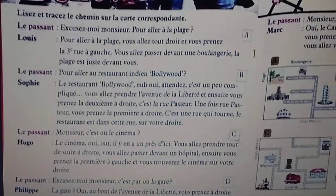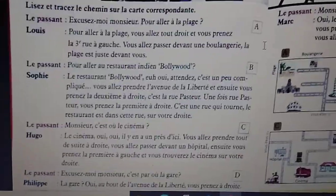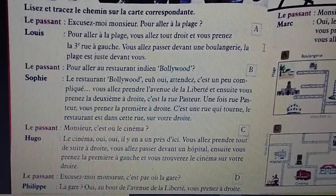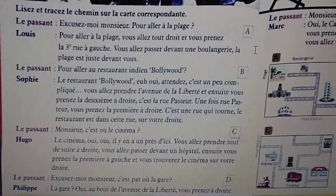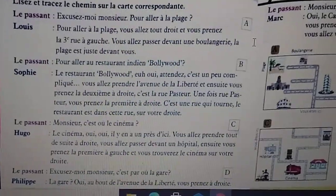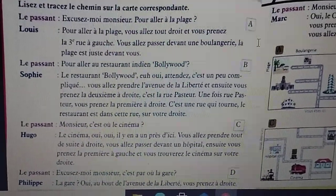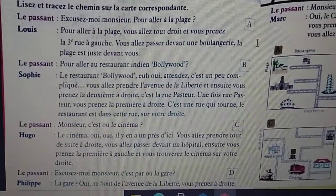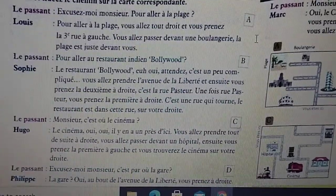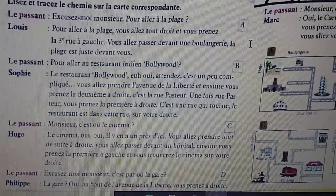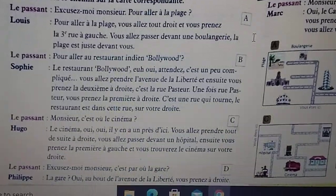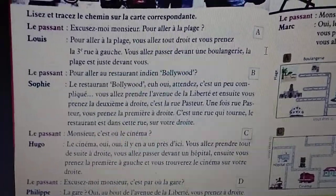Excusez-moi, monsieur, pour aller à la plage? Pour aller à la plage, vous allez tout droit et vous prenez la troisième rue à gauche. Vous allez passer devant une boulangerie. La plage est juste devant vous.